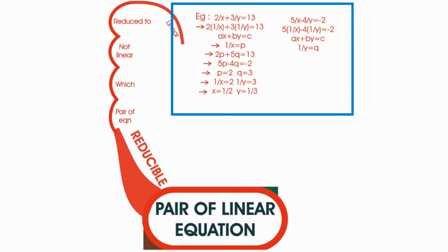then we will get 2p plus 5q equals 13. By substitution method or elimination method, we will find x and y values. So this equation is reducible to linear equation.